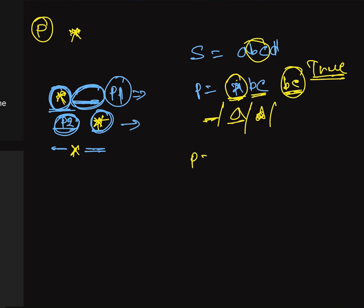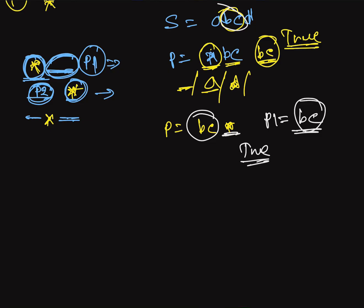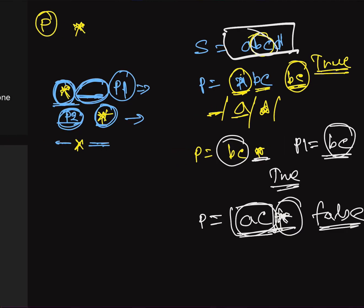Similarly, if the star is at the end, like p is 'bc*', we remove the star and get 'bc', then check if it is a substring of s. For example, if p is 'ac*' and s is 'abcd', the remaining string is 'ac' which is not a substring of s, so we return false. Whatever character we replace the star with, the result cannot be a valid substring.